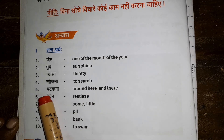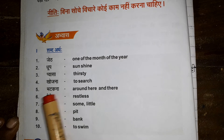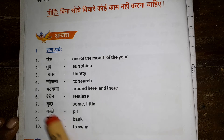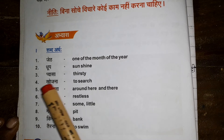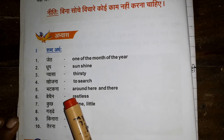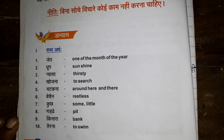Next, the fifth word: Bhatak na. It has three letters: Ba, Ta, Ka — Bhatak. Then Na. Bhatak na means roaming around here and there. You can also say 'roam.' Bhatak na — around here and there.